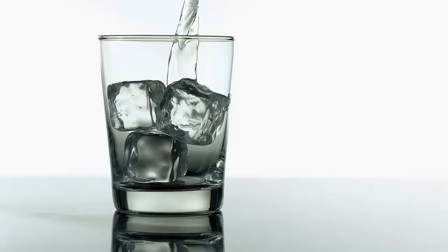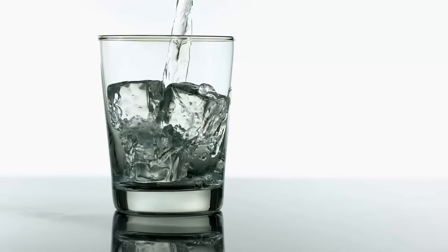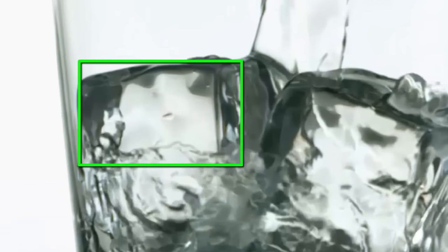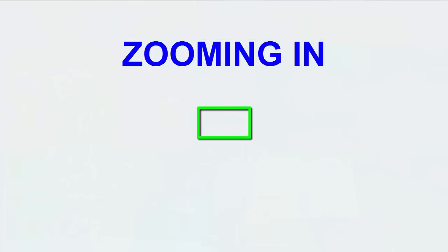Maybe we can understand why substances have different states if we zoom in to see what their molecules are doing. We'll start with solid ice and we need to magnify it a billion times. Each green rectangle is a hundredth of the size of the one before it. So four zooms will magnify ice enough to see its molecules.